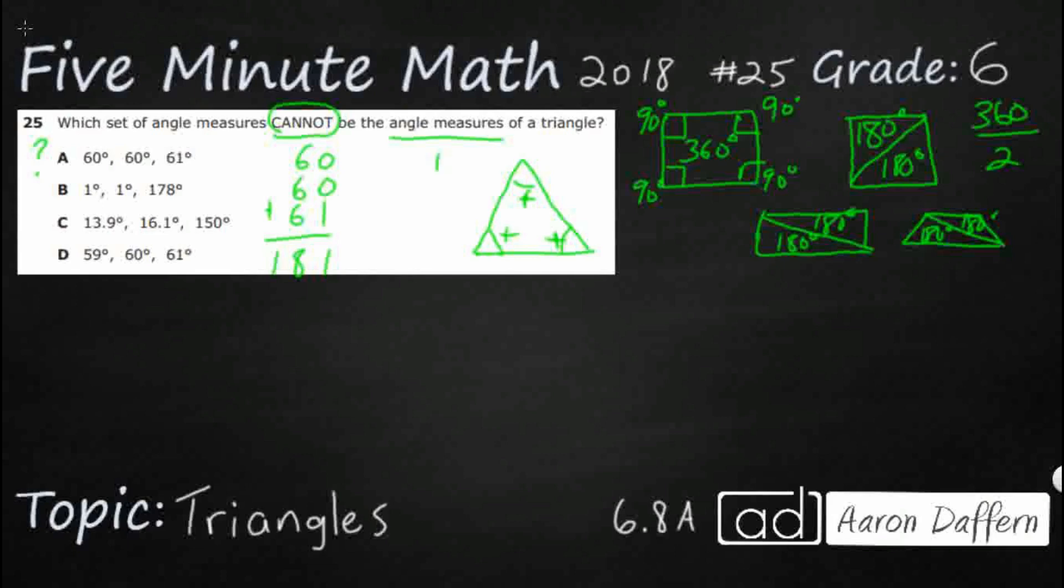Let's just double check. We've got 1, 1, and 178. That would be a really strange triangle. It almost looked like a flat line, but it wouldn't quite be a flat line. B is okay.